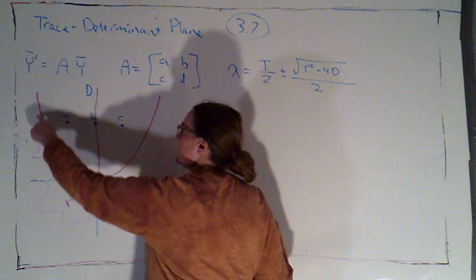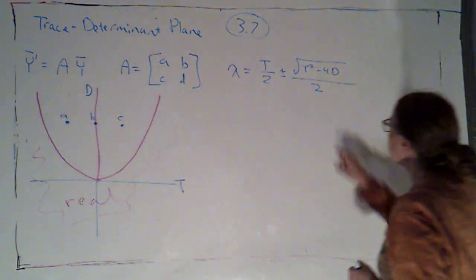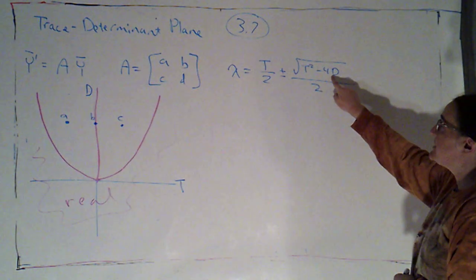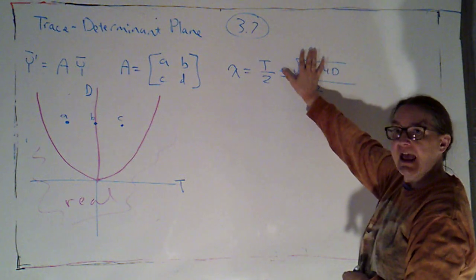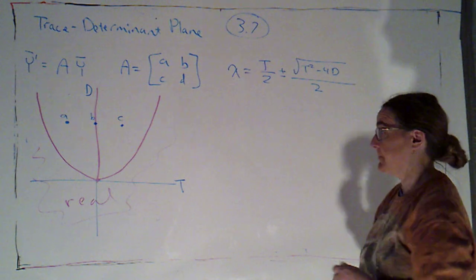What I want to do now is take a look at the region that's actually on this parabola. That was where t squared minus 4d was equal to 0, which meant that we were going to have a real eigenvalue, but it was going to be repeated.